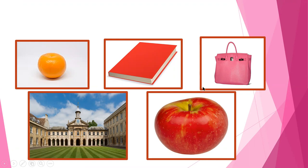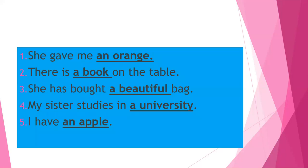But whenever we use these words in a sentence directly, we don't say orange, book, bag, university, or apple. We have to use articles when we are using these words in a sentence. You can see a few examples here: She gave me an orange. There is a book on the table. She has bought a beautiful bag. My sister studies in a university. I have an apple. I have used these articles in the sentences.